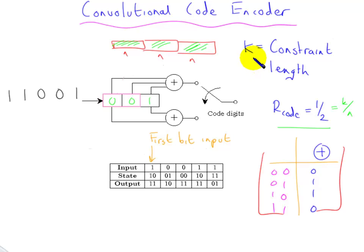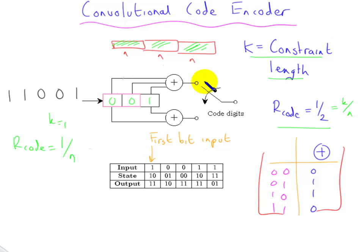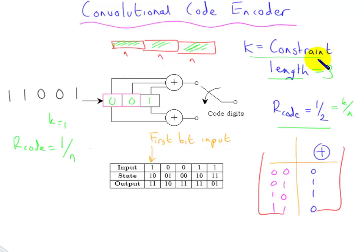The constraint length of a code — if you have a code rate of one upon N, in other words K equals one, so that a single digit enters and we have N outputs — in this case we have two, but if we had three that would be a rate one-third code. The constraint length K is simply the number of shift registers, so in this particular example it's equal to three. The constraint length is actually the number of shifts over which a single input digit can influence the encoder output, and you can see that the number of shifts is one, two, three.